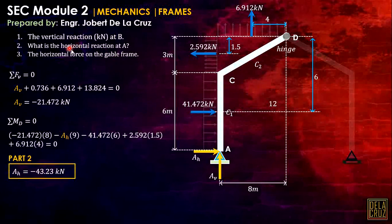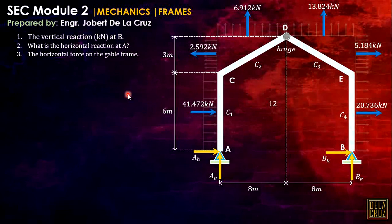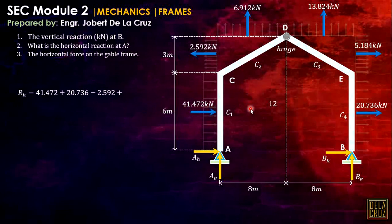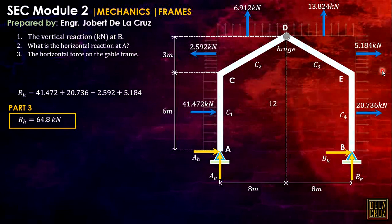The horizontal reaction at A is negative 43.23 kilonewtons. For the total horizontal force acting on the gable frame, we consider all horizontal forces: 41.472 plus 20.736 going to the right, minus 2.592, plus 5.184, giving a total horizontal force of 64.8 kilonewtons.